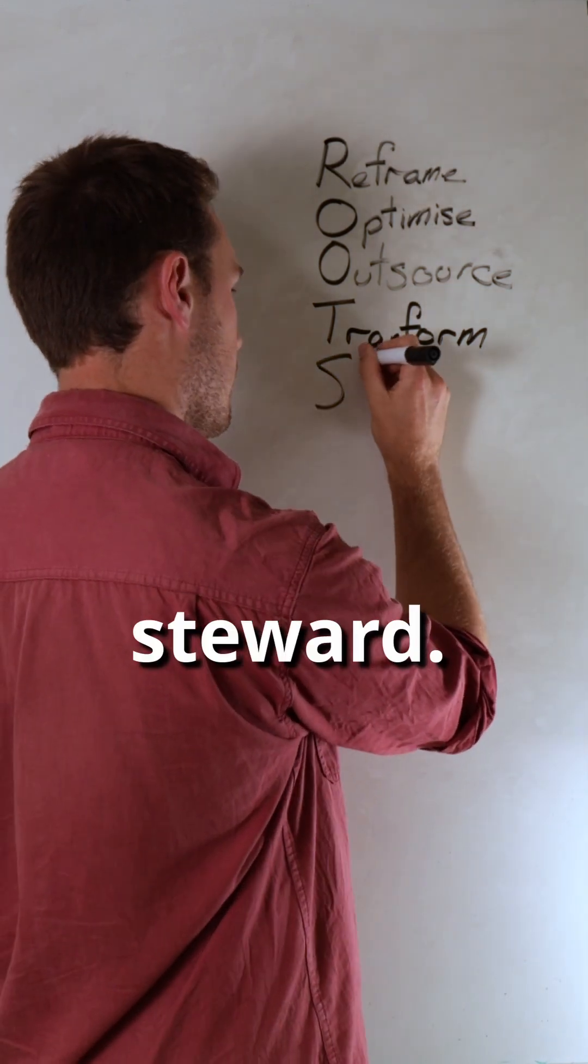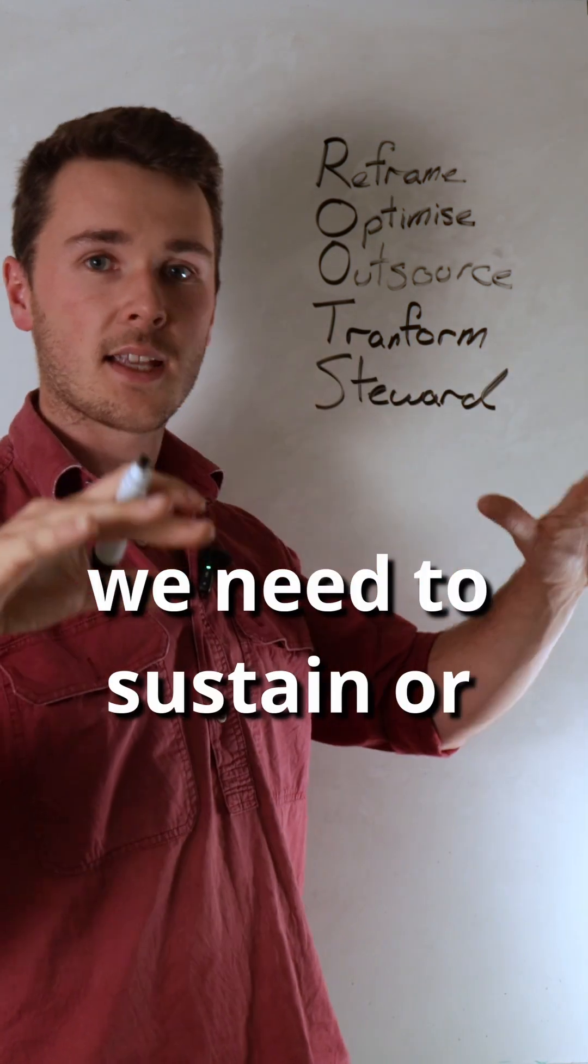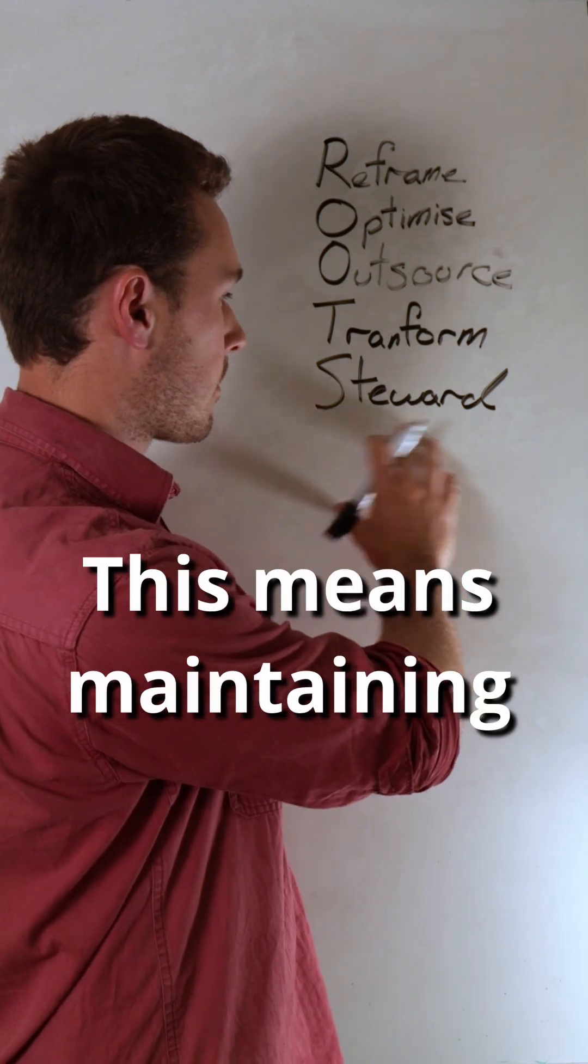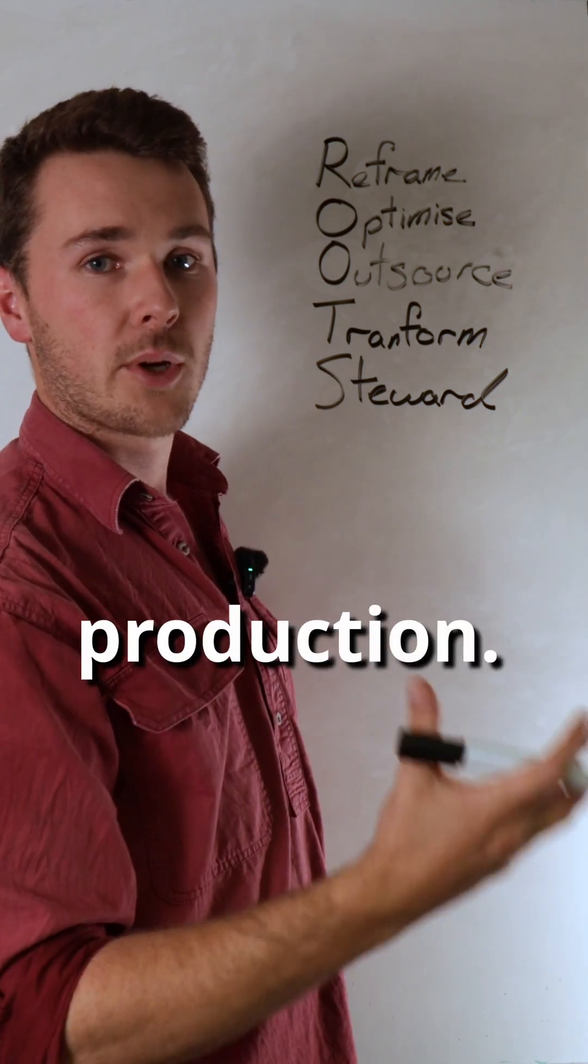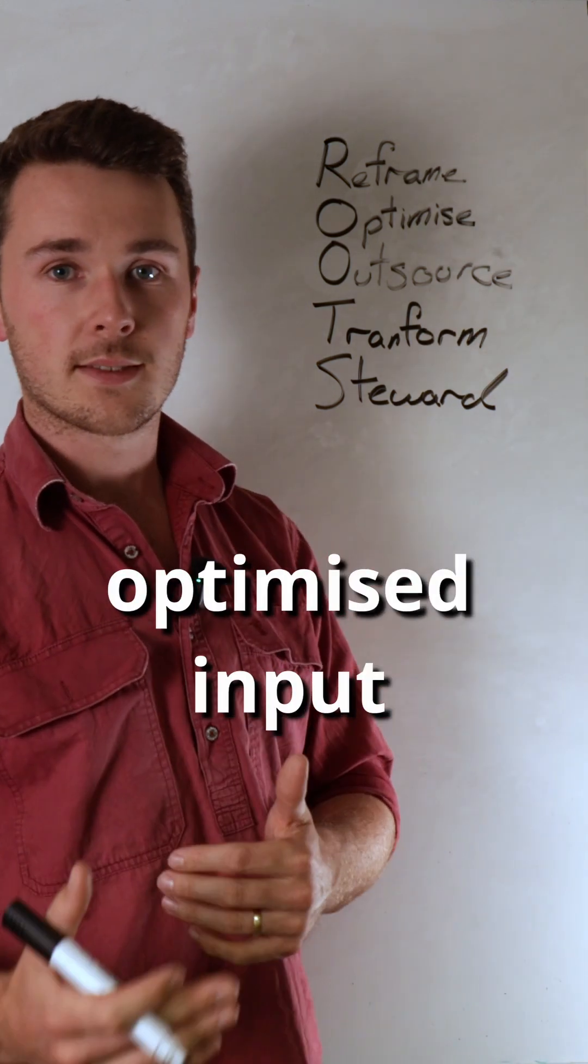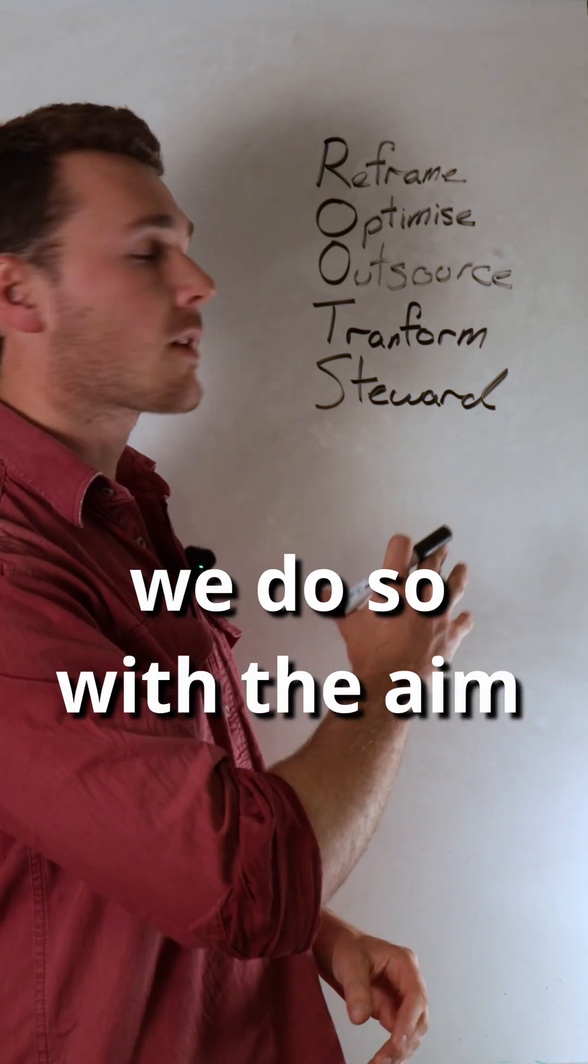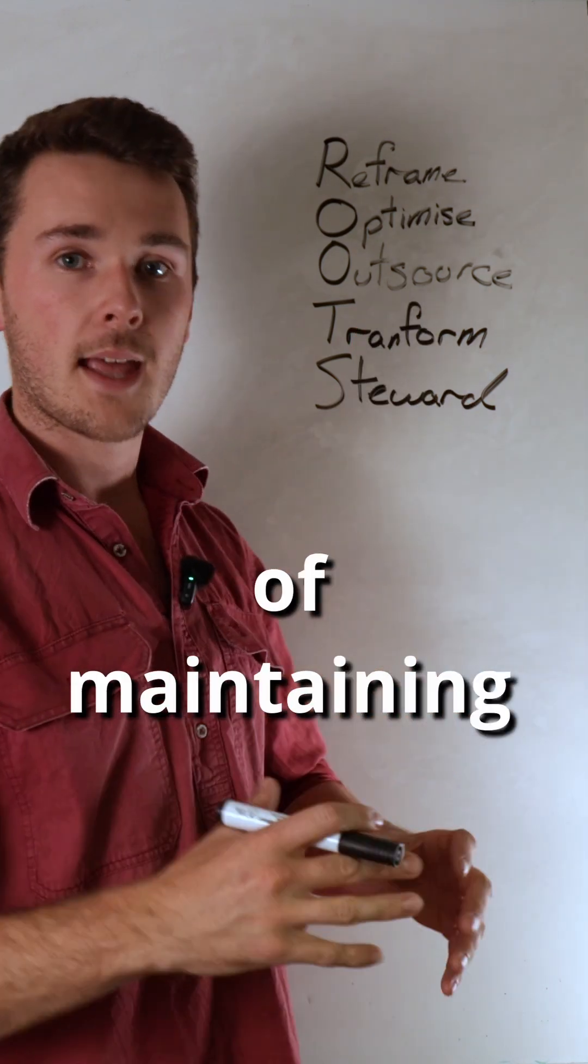Finally, we have Steward. Stewarding is the last component. Once we've regenerated our farm, we need to sustain or steward that system. This means maintaining and optimizing production. We don't necessarily want to go to no inputs - we want to find an optimized input using a sustainable approach. And most importantly, we do so with the aim of maintaining or increasing profits.